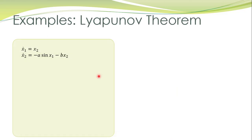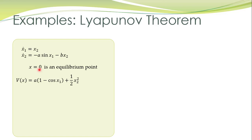We take some examples and apply Lyapunov theorem to determine the stability of the equilibrium points for those systems. We start with our favorite example of the pendulum system. The equilibrium point of this system is at the origin — we want to discuss the stability of the equilibrium point at the origin.